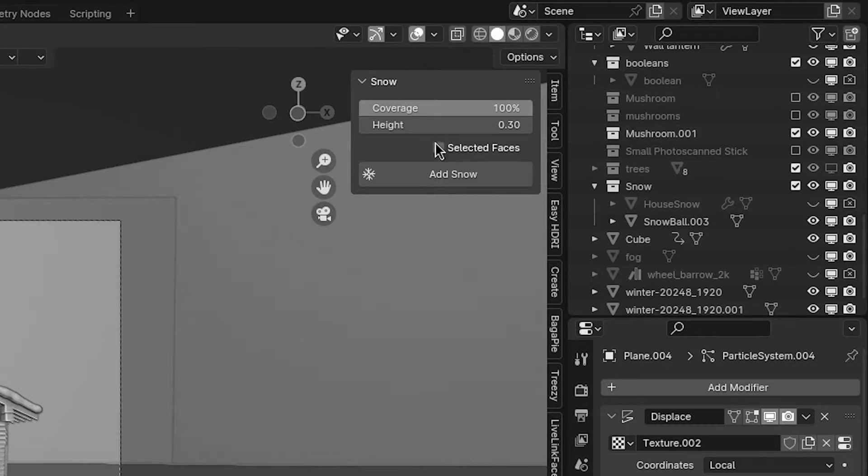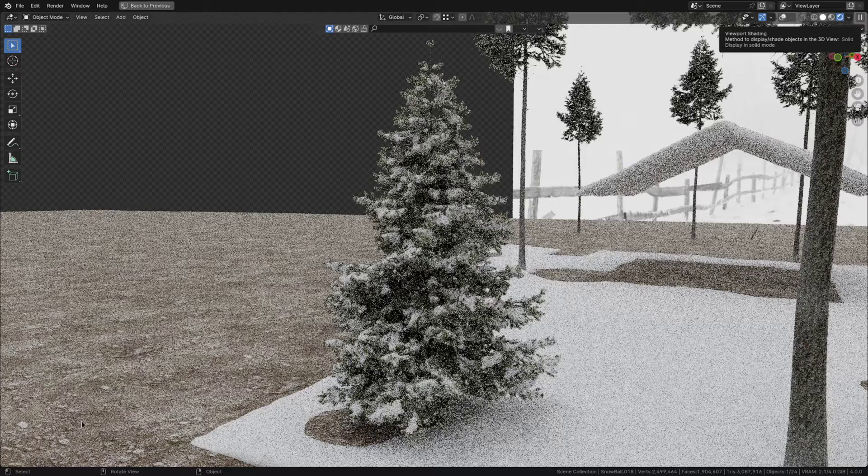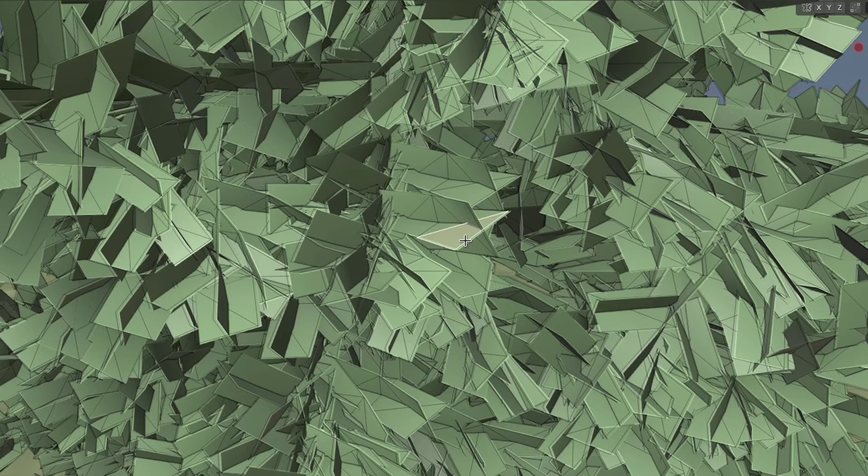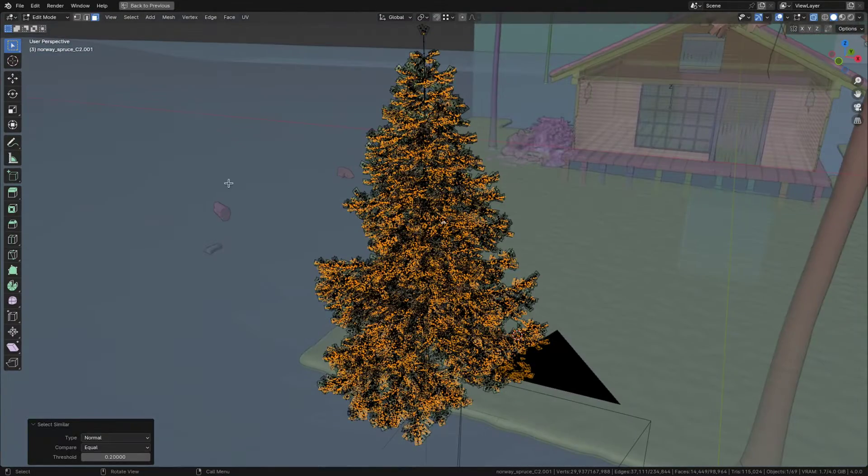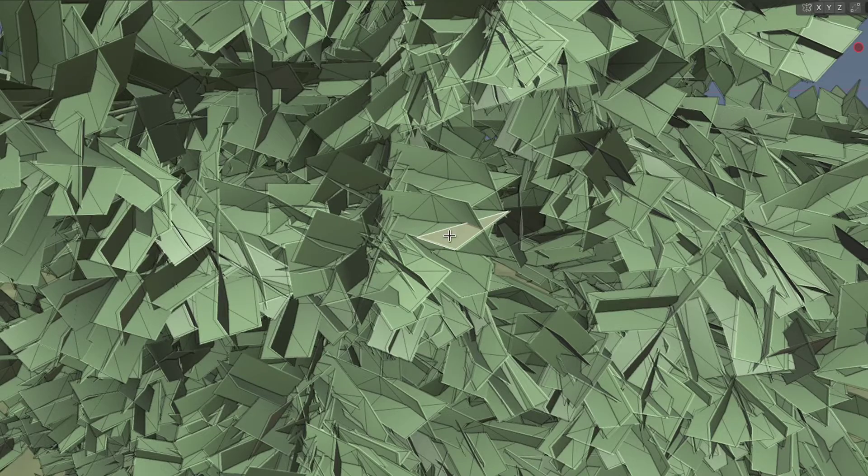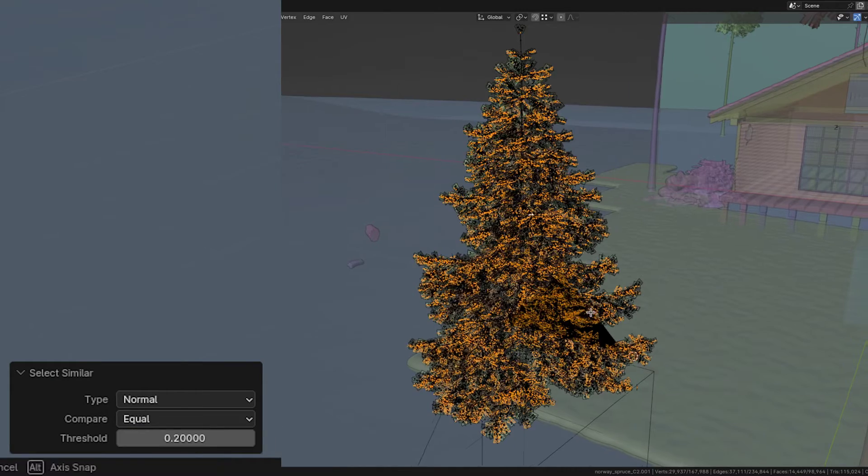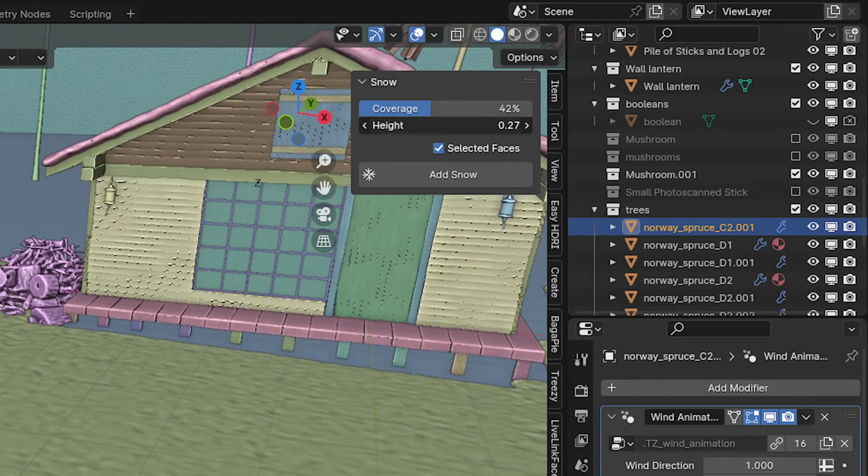By the way, as a side note, this select faces thing is also very useful if you want to add snow to the tops of tree branches. You can just select the face that points upwards, press shift G and click normal, which will only select the faces that point the direction of the pre-selected face. Then to tweak the amount of snow, tweak the threshold of the select similar effect, as well as the snow coverage and height in the real snow add-on.